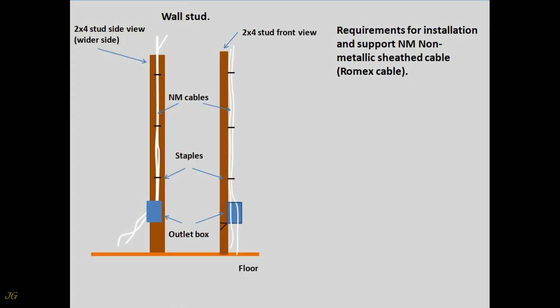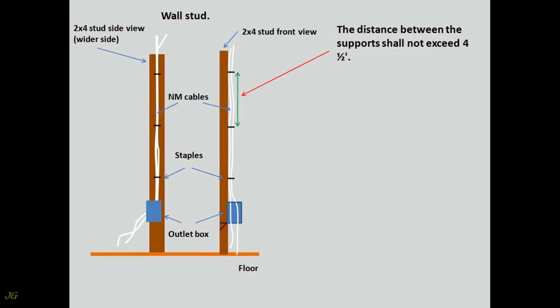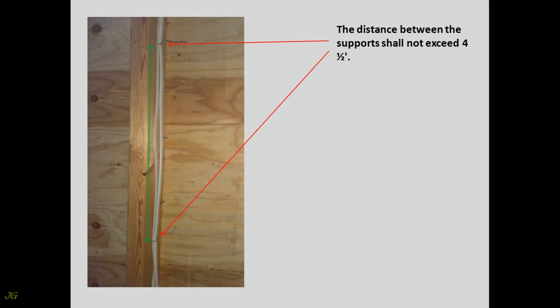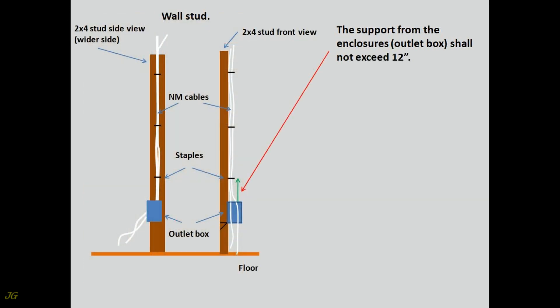Requirements for installation and support NM non-metallic sheathed cable, Romex cable. The distance between the supports shall not exceed 4.5 feet. The support from the enclosures, outlet box, shall not exceed 12 inches.